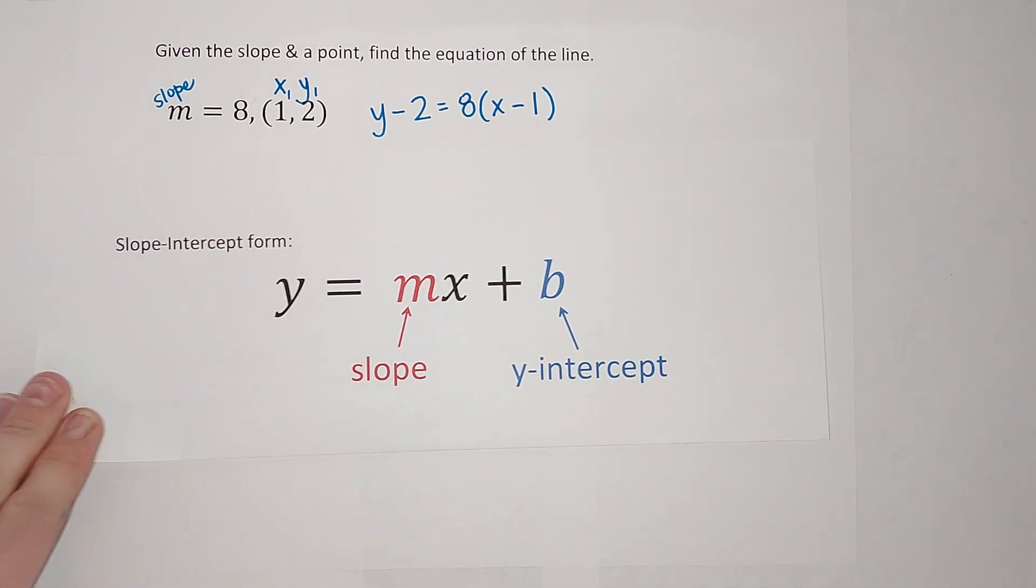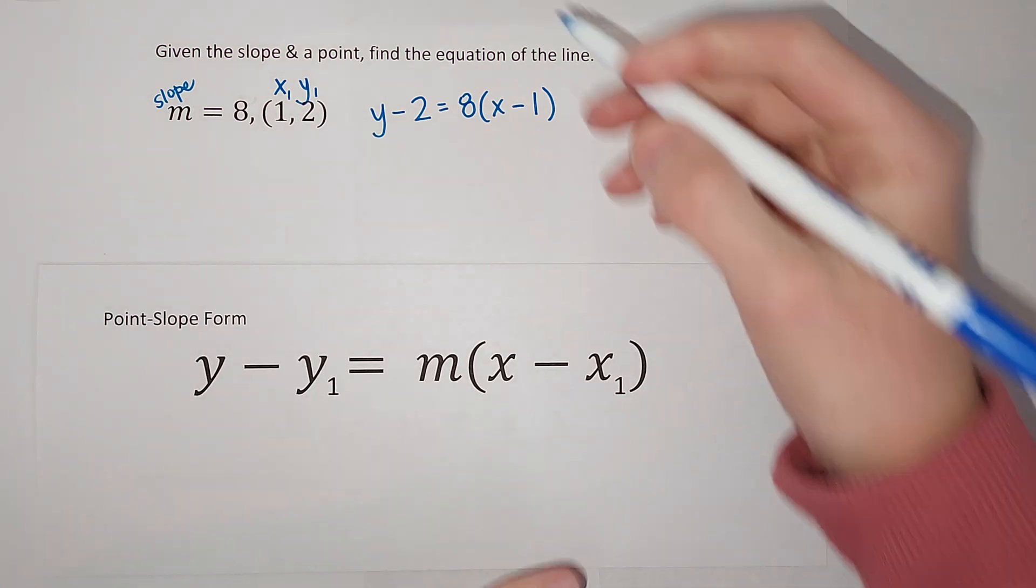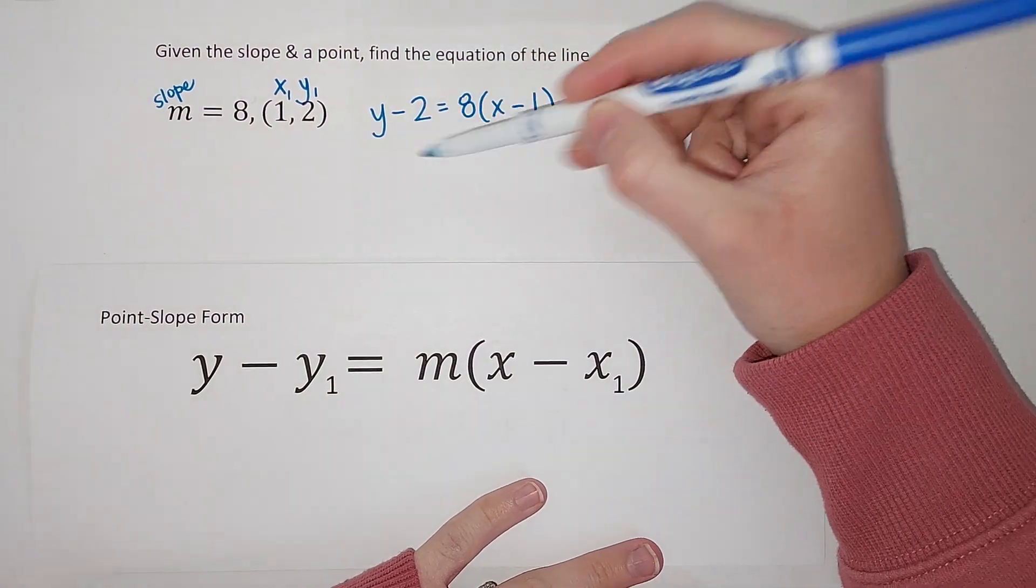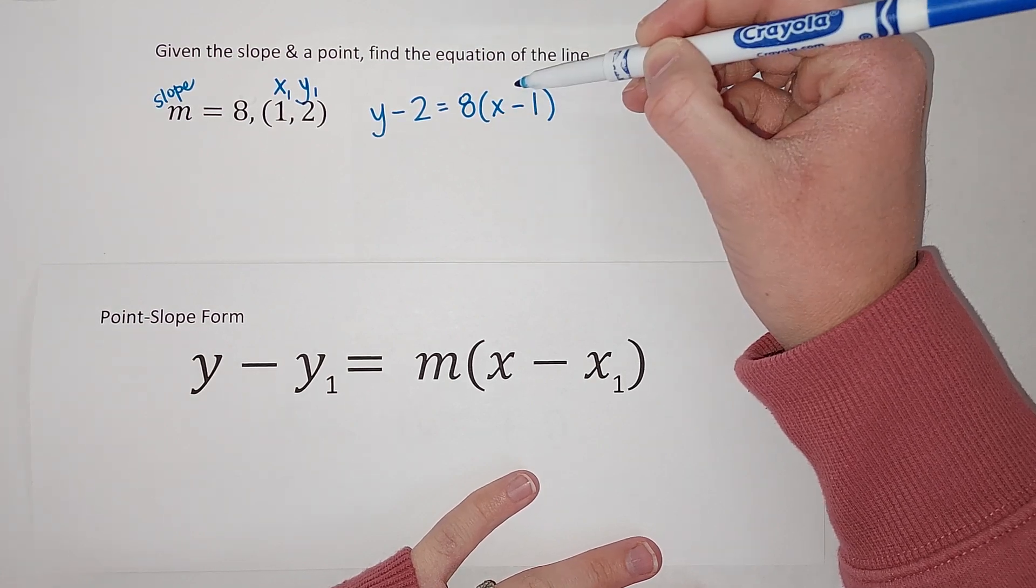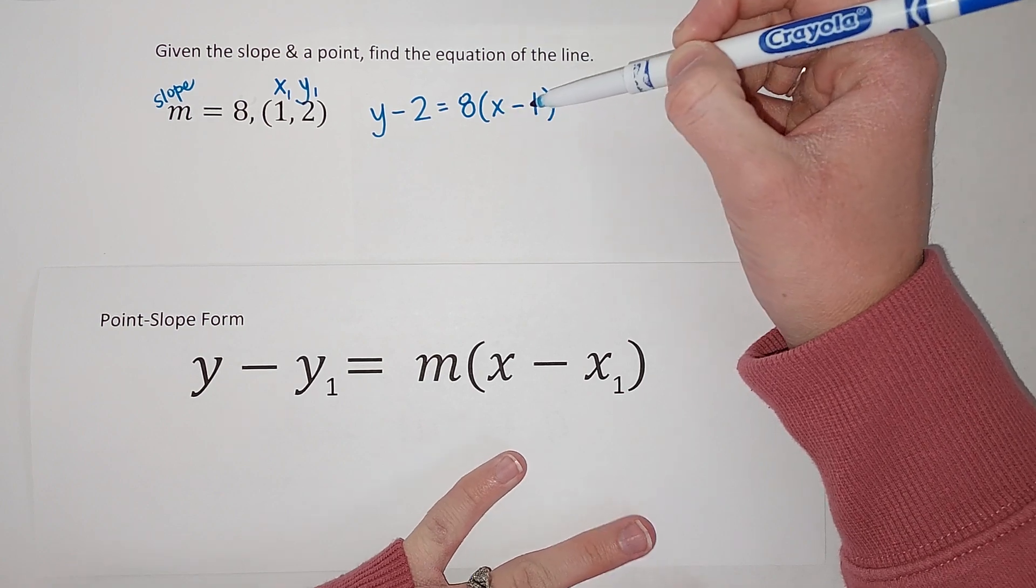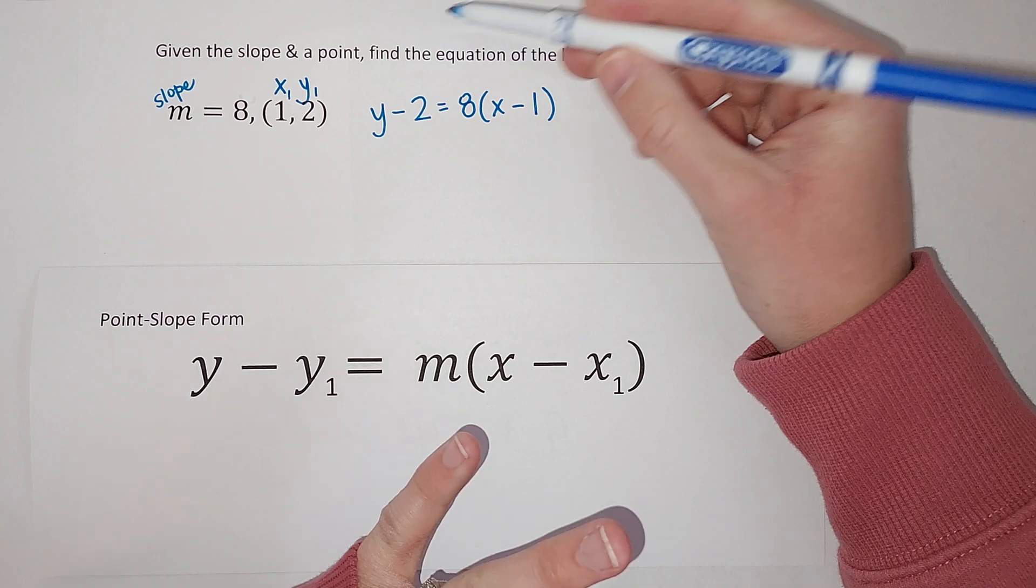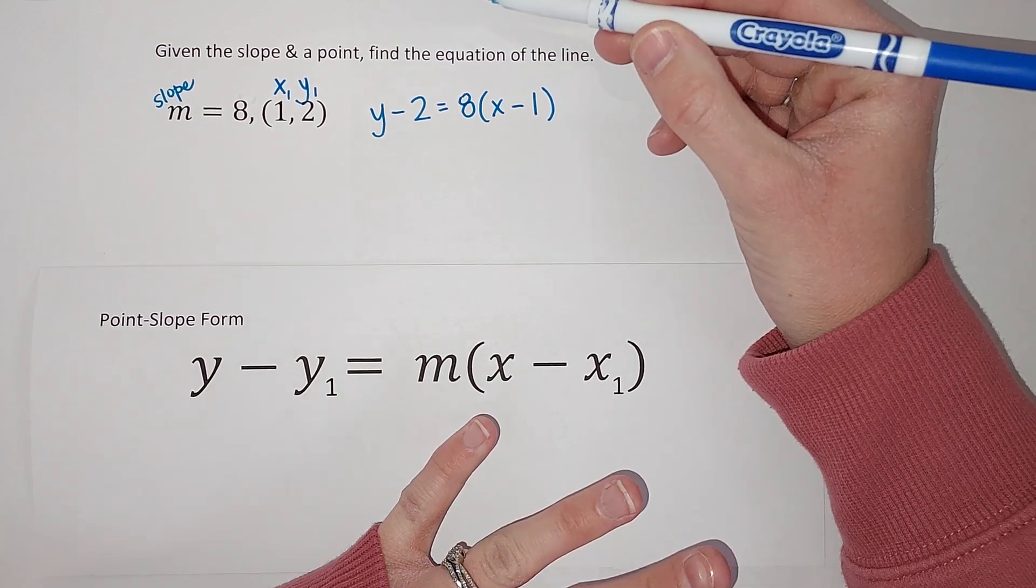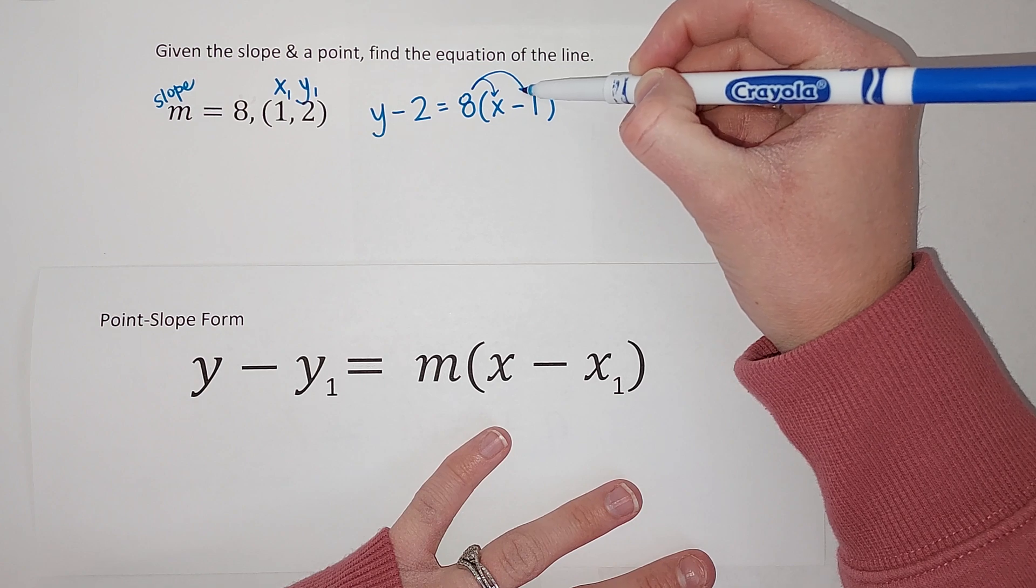So we want Y alone. Oh my gosh, Y alone. Sorry guys, we want Y alone. So when I am simplifying this or working it out, normally I would do what's inside the parentheses first via the order of operations, right? But they're not like terms, meaning I don't know what X minus 1 is. But how I get around that is the distributive property. Stick with me if this sounds complicated. You've probably been doing it.